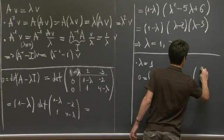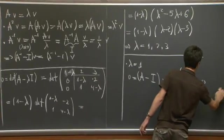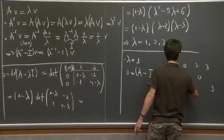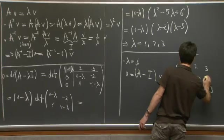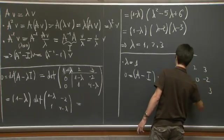Let me write this out. It's 0, 0, 3, 2, 3, 0, negative 2, 0, 1.